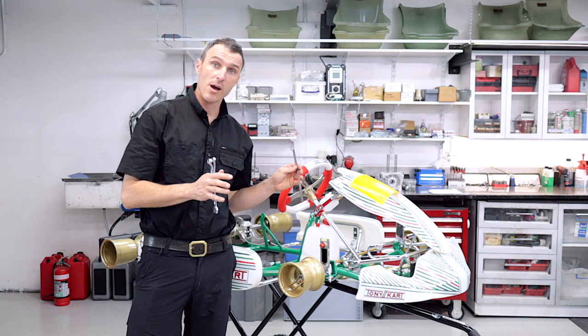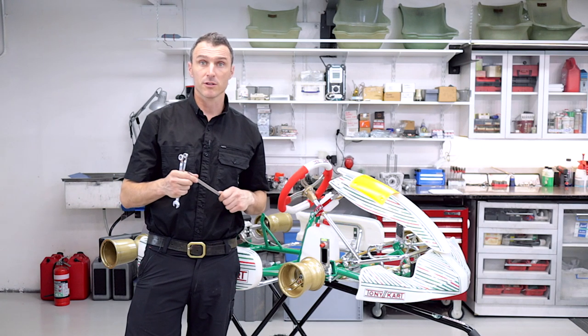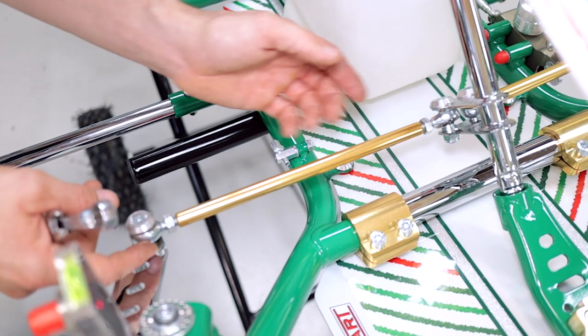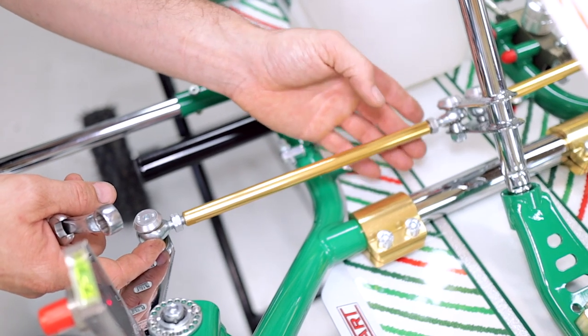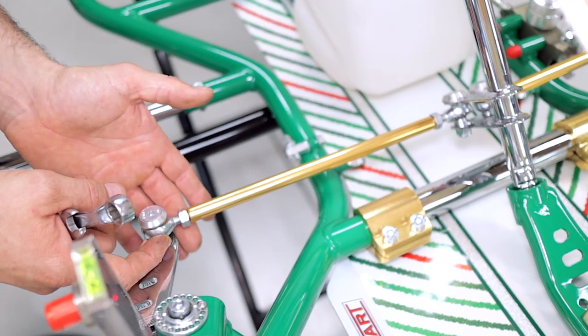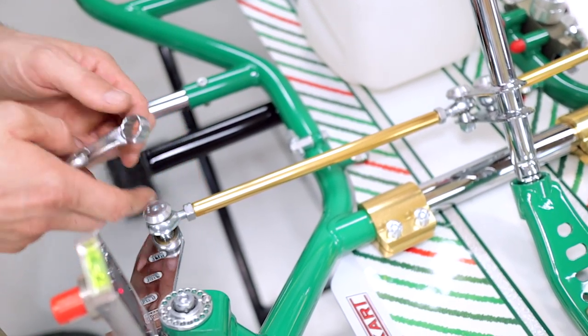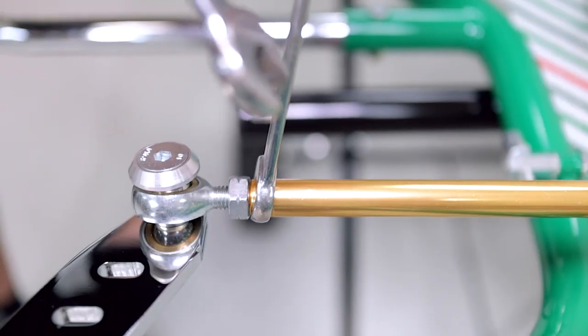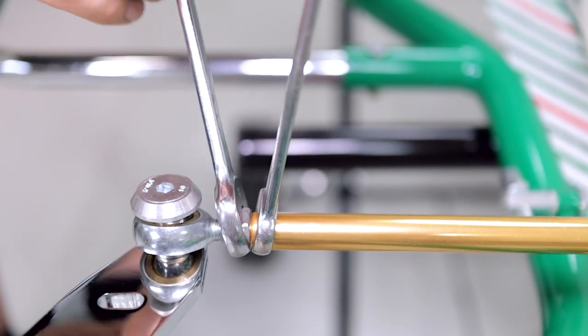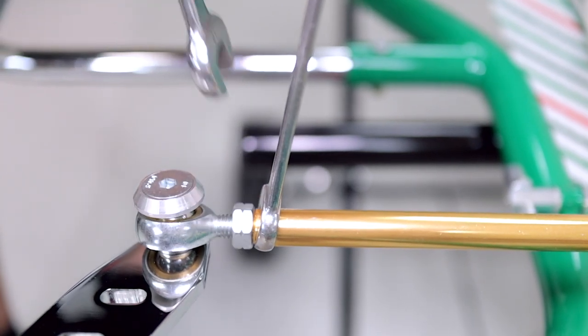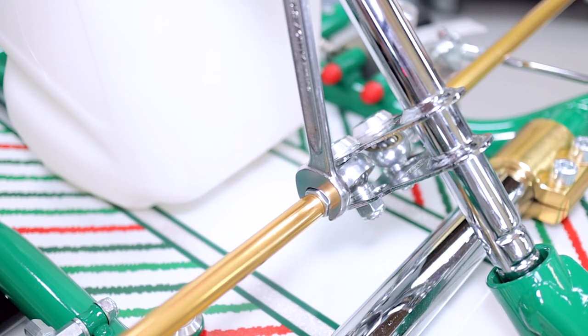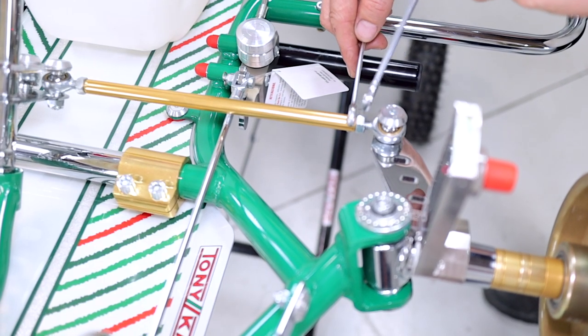So now that we've set our toe out, we've just got to lock it off on the tie rods. So what I like to do is push both tie rod ends in the one direction, turn the nuts roughly to touch the tie rod, then holding the tie rod stationary, tighten one side, then tighten the other side. Make sure you do both sides of the car.